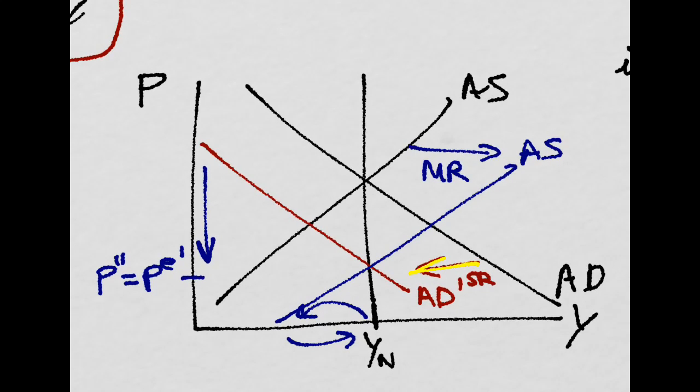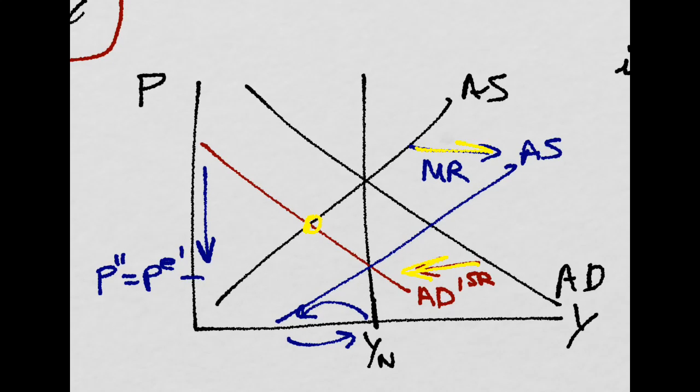In the short run, there is a shift left of the aggregate demand. And then in the medium run, there is a shift to the right of the aggregate supply until this point is reached with lower prices.